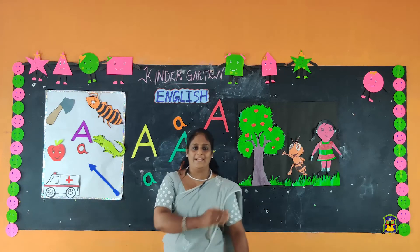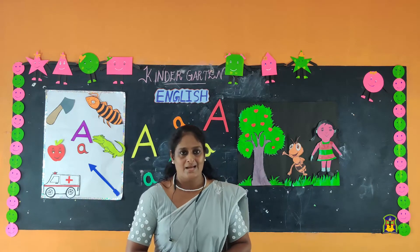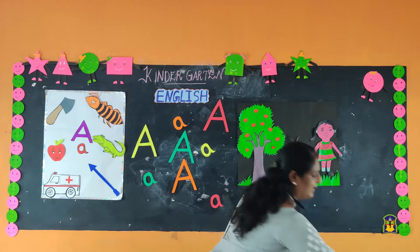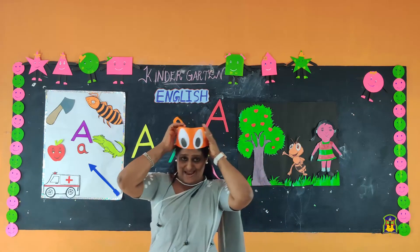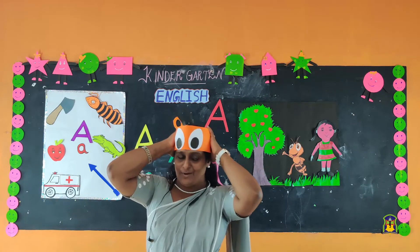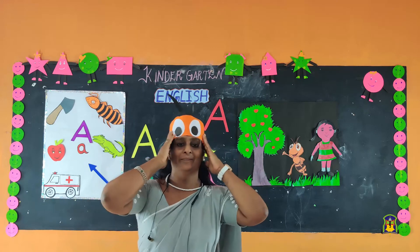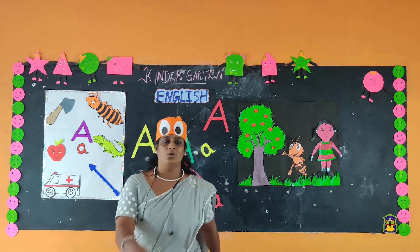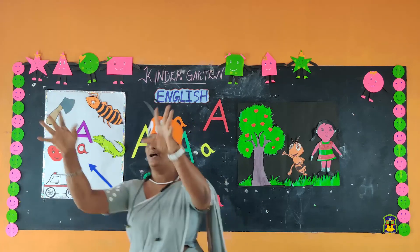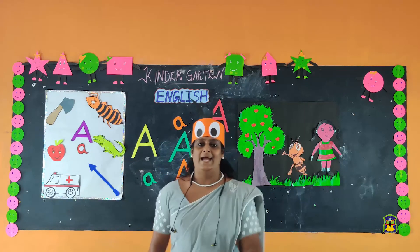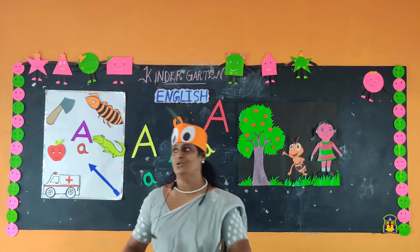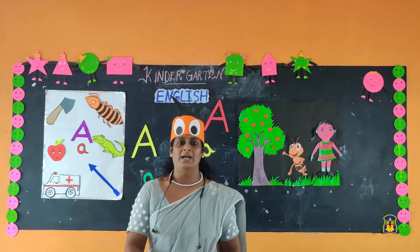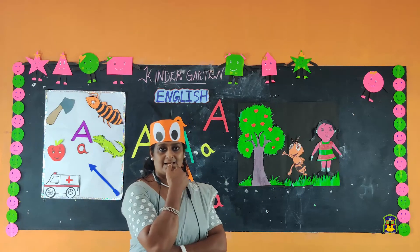Arrow. Very good. All of you say — shall we sing again? Bye bye, hurrah! Hurrah, the ants go marching, hurrah! Hurrah, the ants go marching.